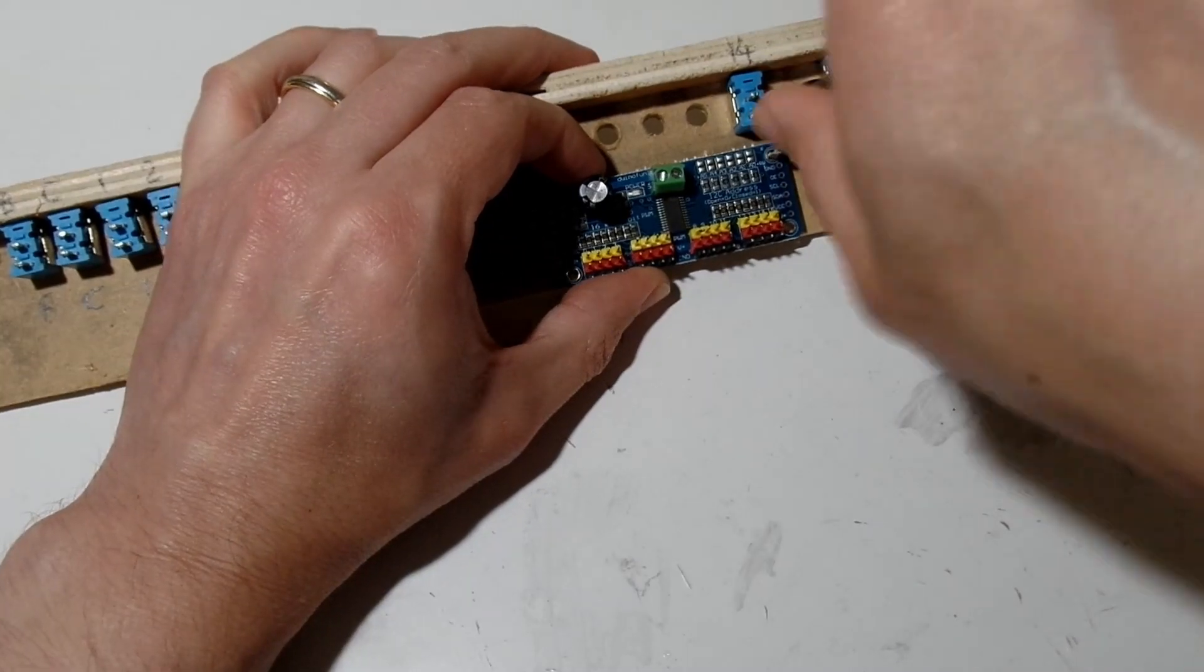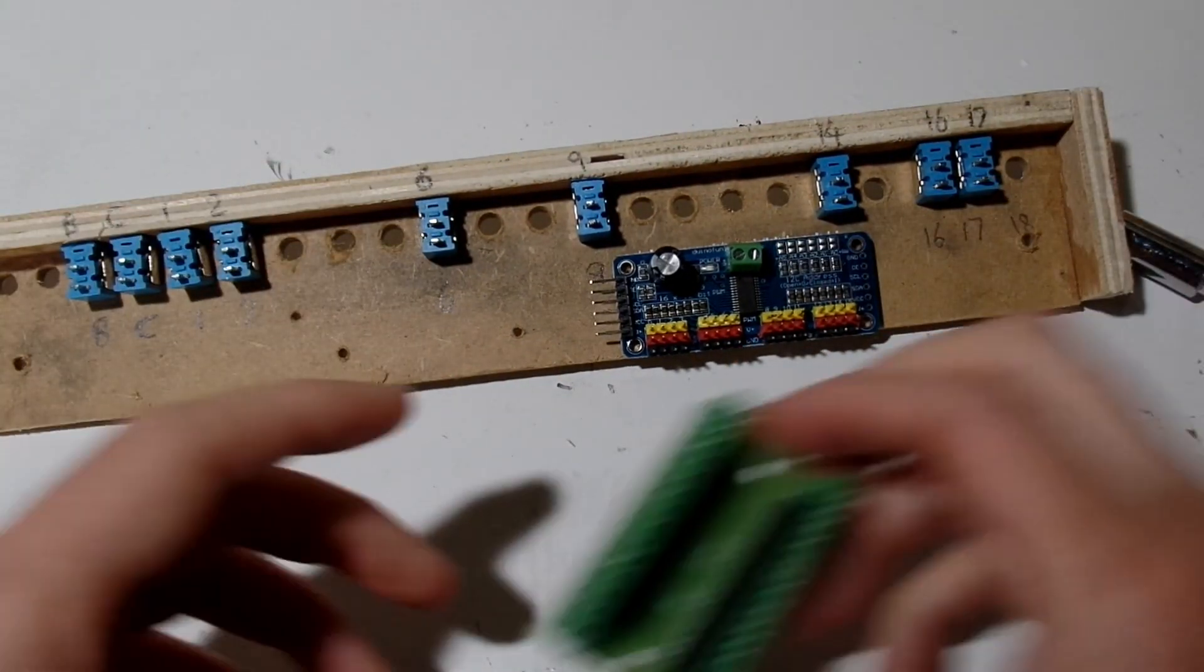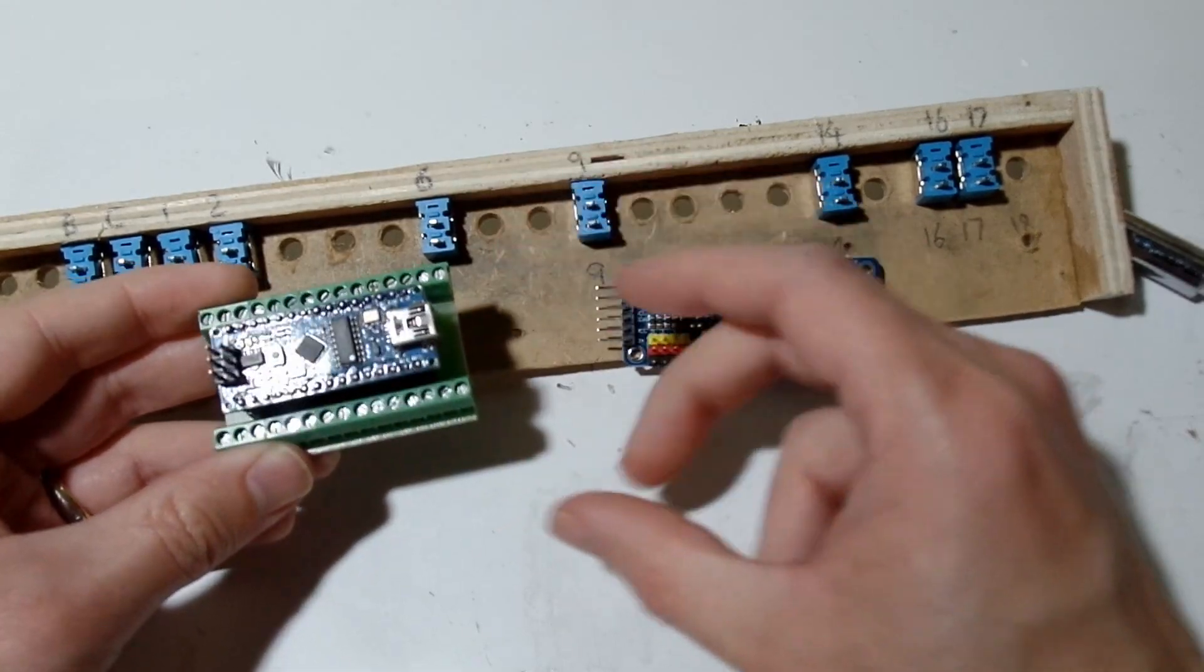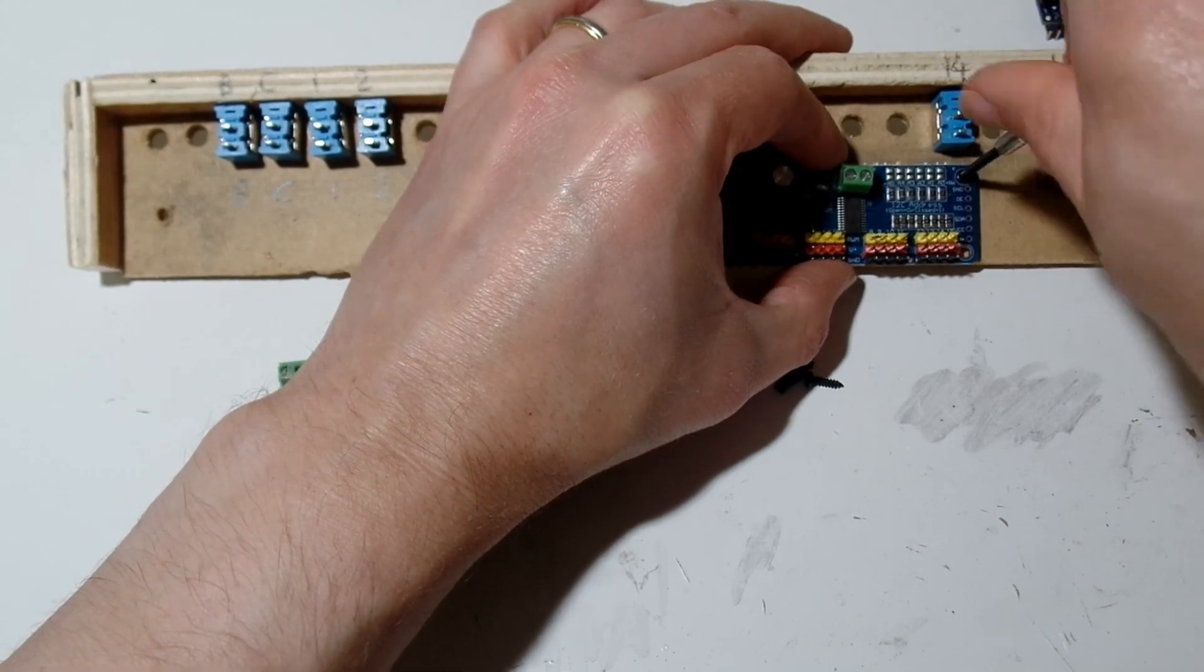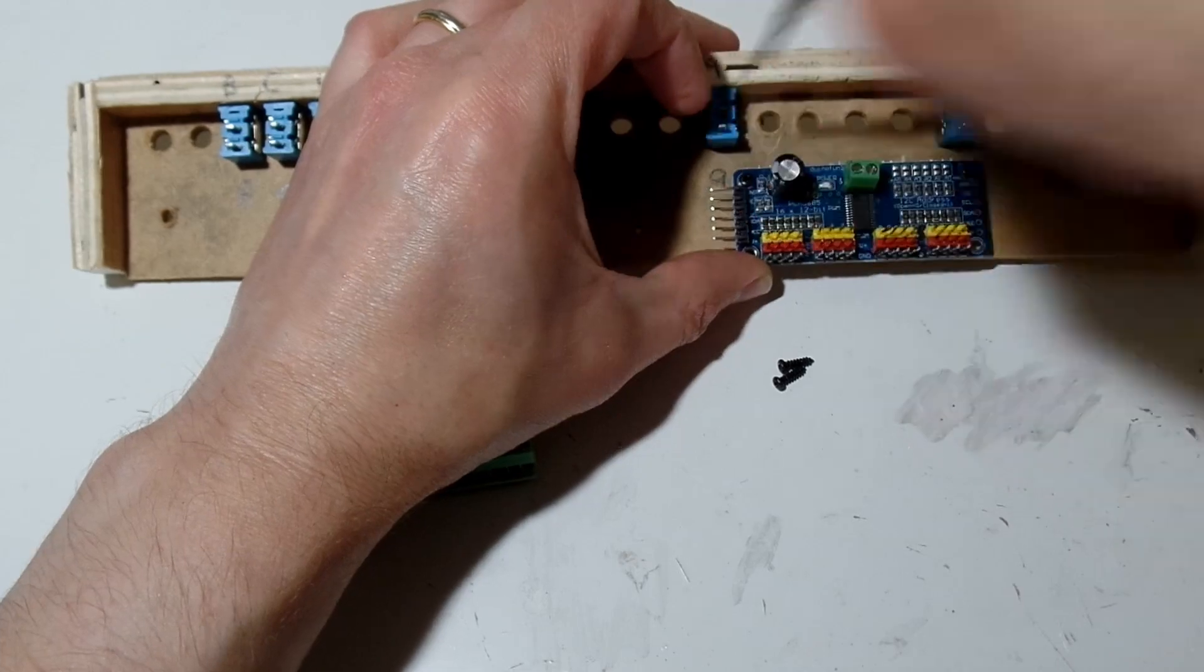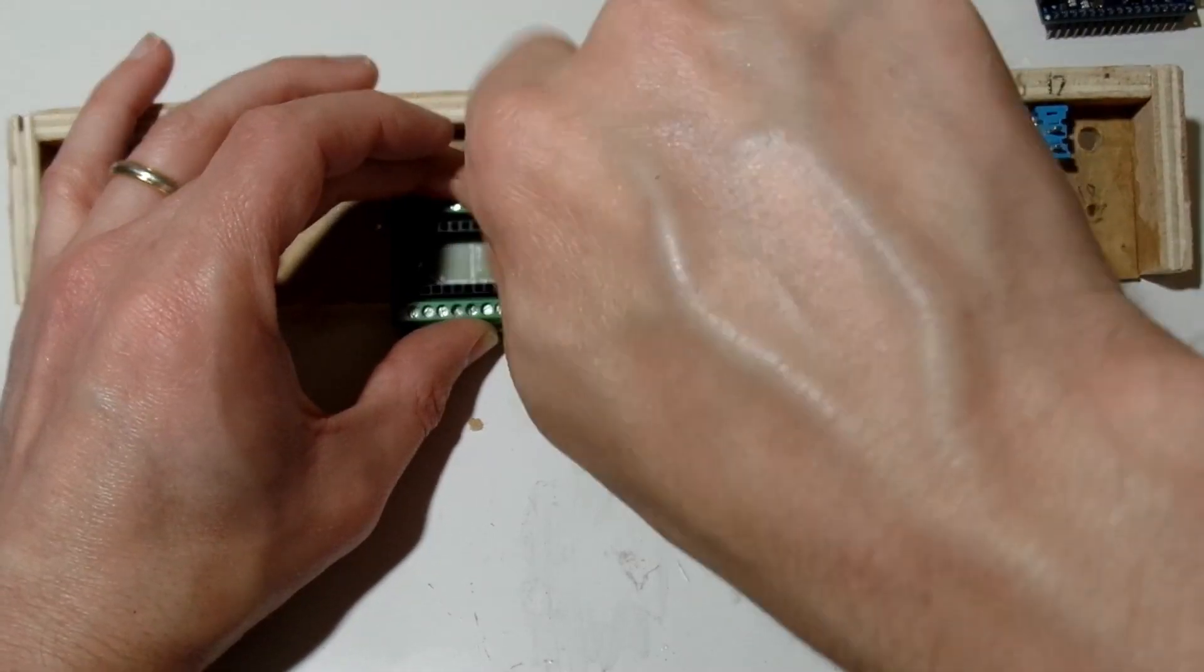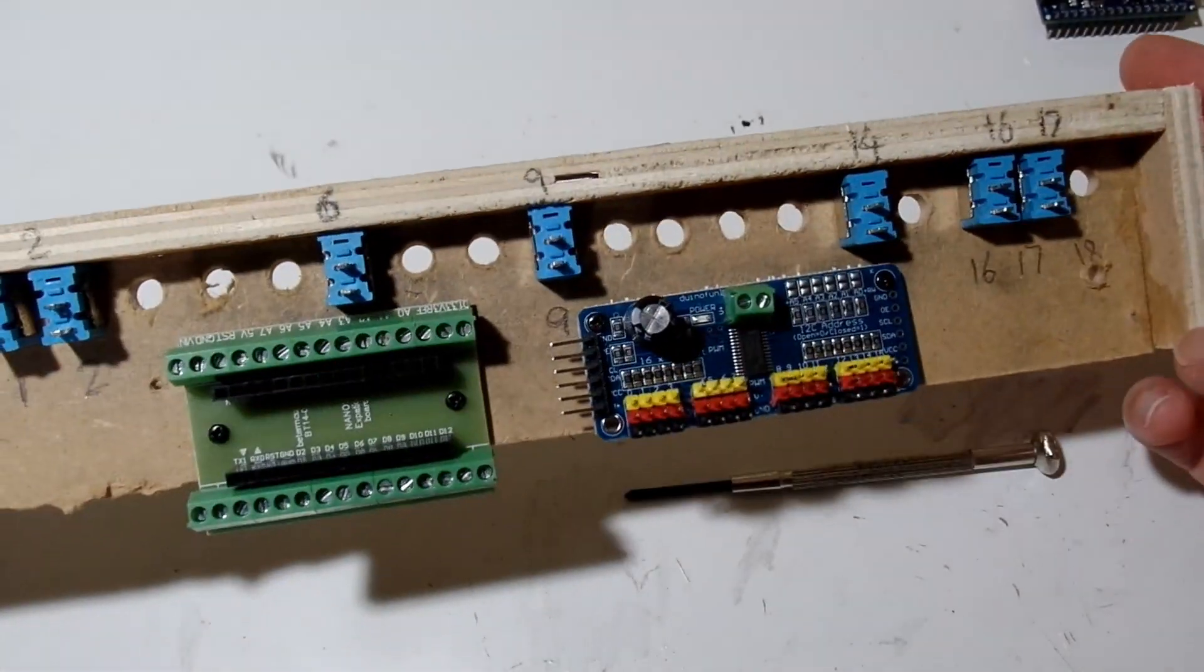So I drilled some new holes to mount the servo driver. I also had this expansion board from a previous project, which should be useful. You plug the Arduino Nano into the socket, and then all the legs have screw terminal blocks, which is much neater. So I screwed both boards directly to the underside of the switch panel. Technically, I should probably have used proper PCB standoffs, but as long as the boards aren't being bent, it's absolutely fine. And the wood is non-conductive, so it doesn't pose a problem.